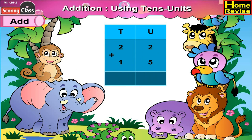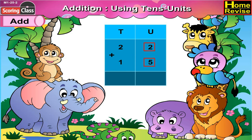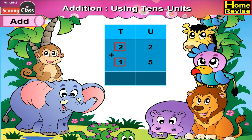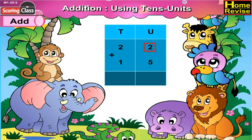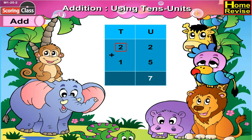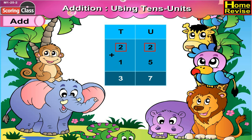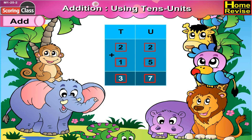In the next sum, under units we have 2 plus 5, under 10s we have 2 plus 1. 2 plus 5 is 7, 2 plus 1 is 3. So 22 plus 15 is 37.